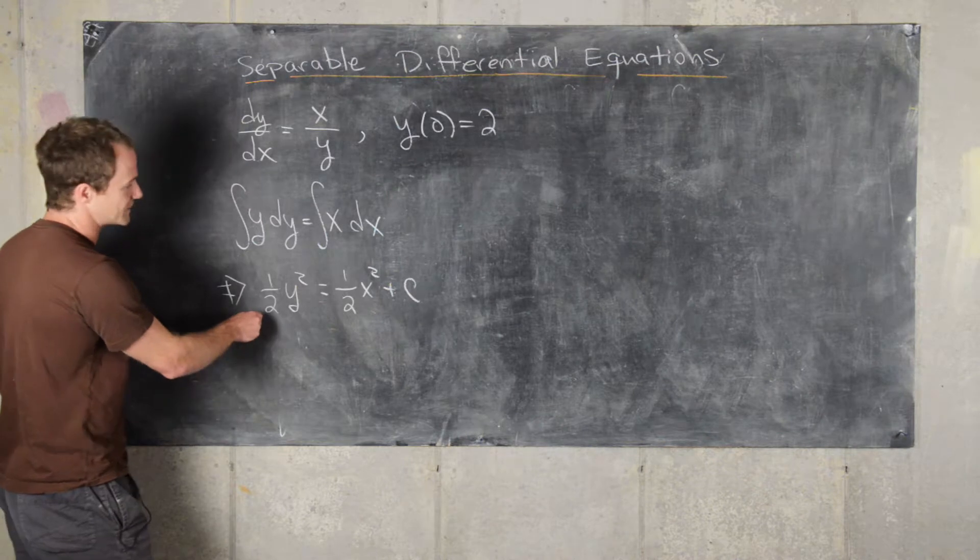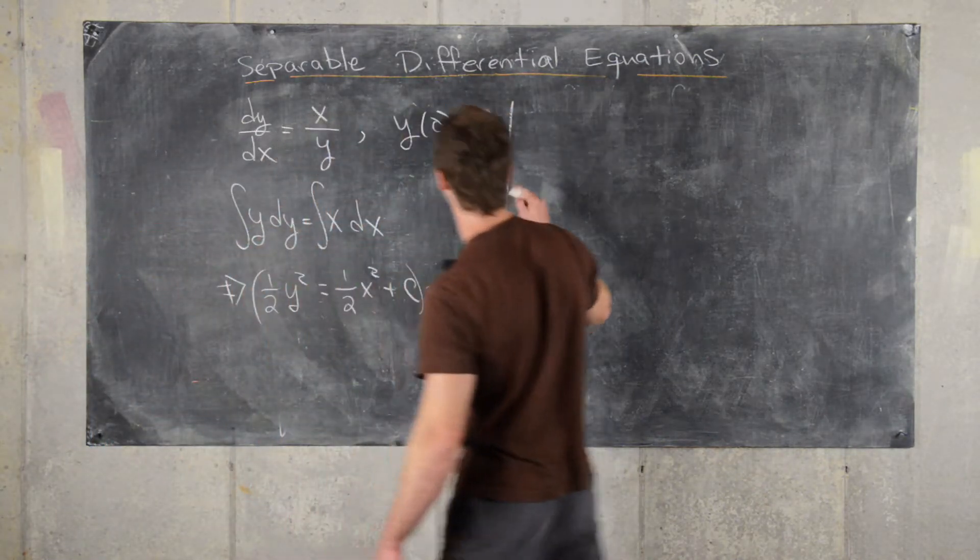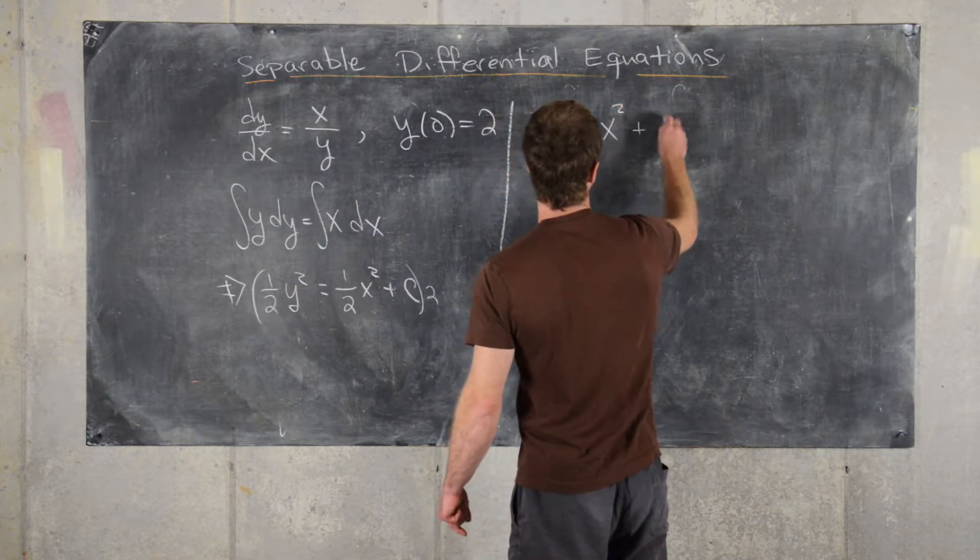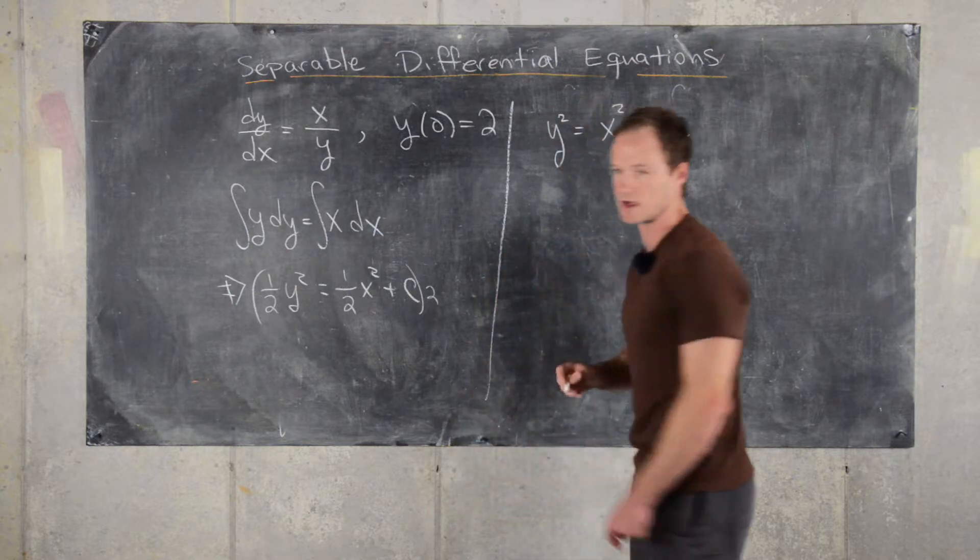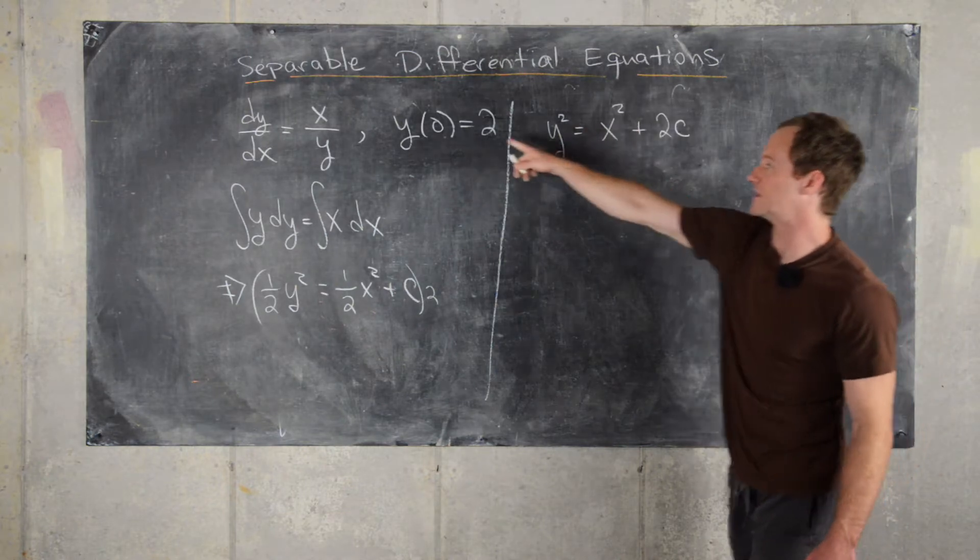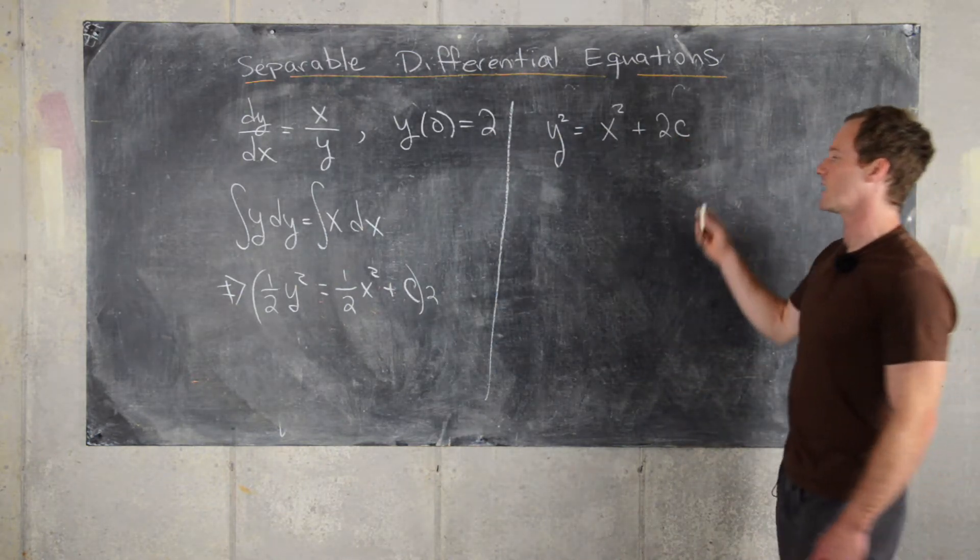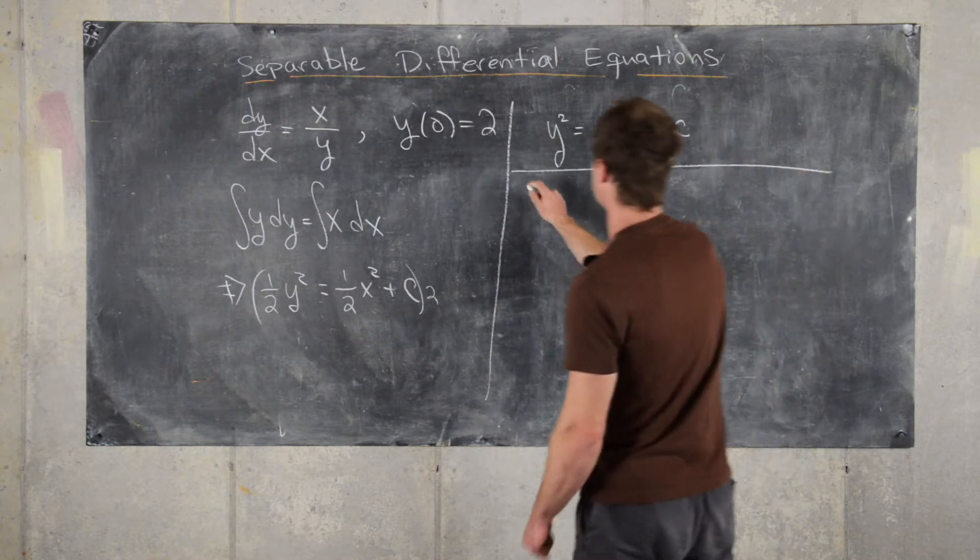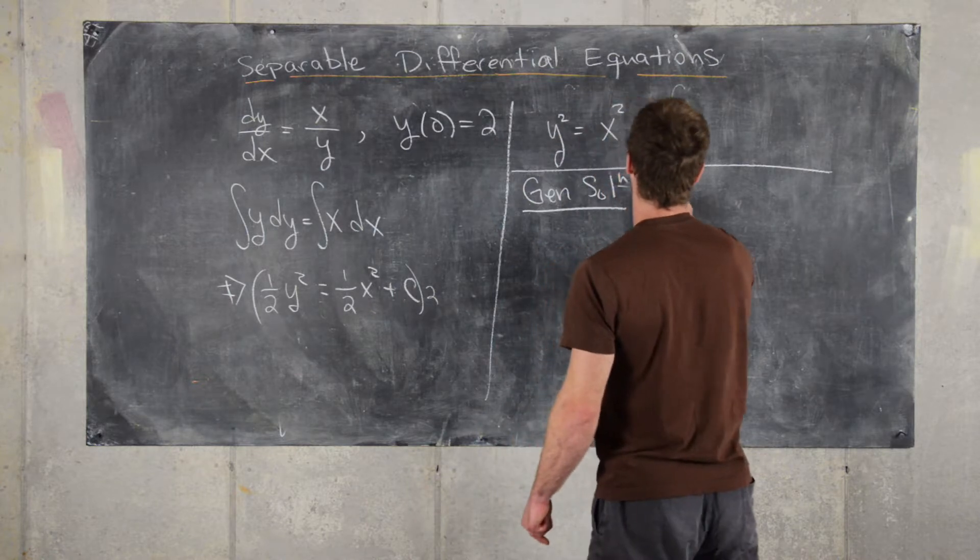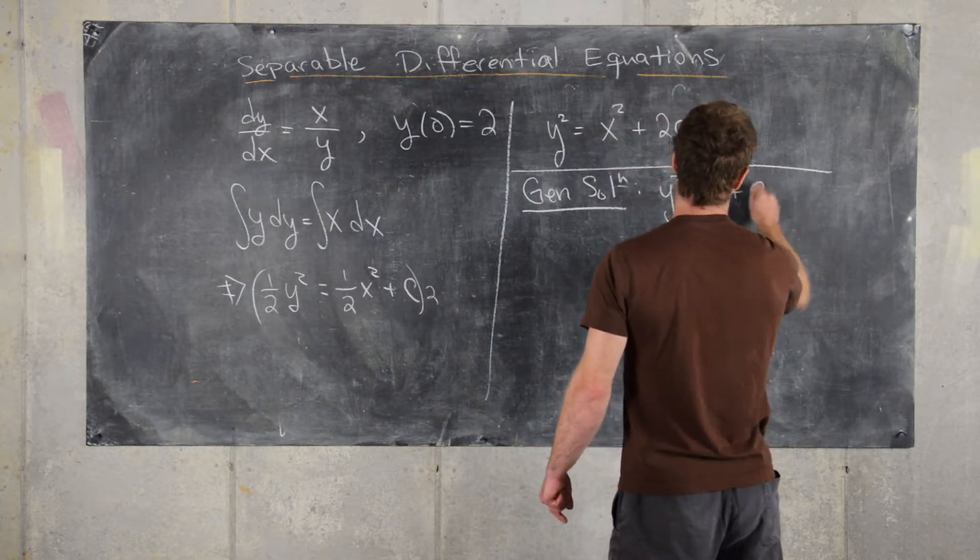Now let's multiply both sides of this equation by 2. That'll give us y² = x² + 2C. But again, since this constant is arbitrary to be determined by the initial value, we can absorb this 2 into the constant. That means our general solution is of the form y² = x² + C.